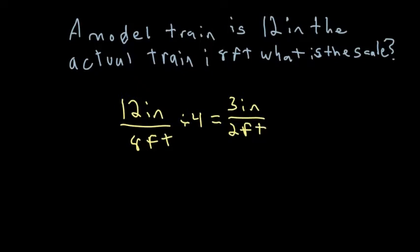You can actually reduce that even further if I wanted to know what one foot was. I could divide this again by two to get half of two, which would be one foot on bottom, and then half of three would be one and a half. So you'd have one and a half inches equals one foot. Because it's a ratio, it's okay to have a decimal in your ratio as your final answer.